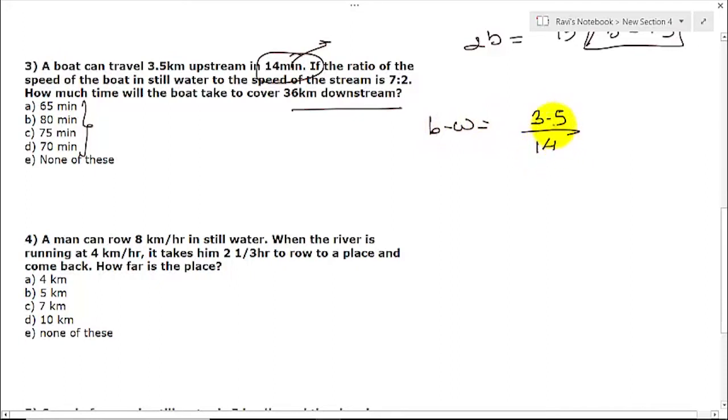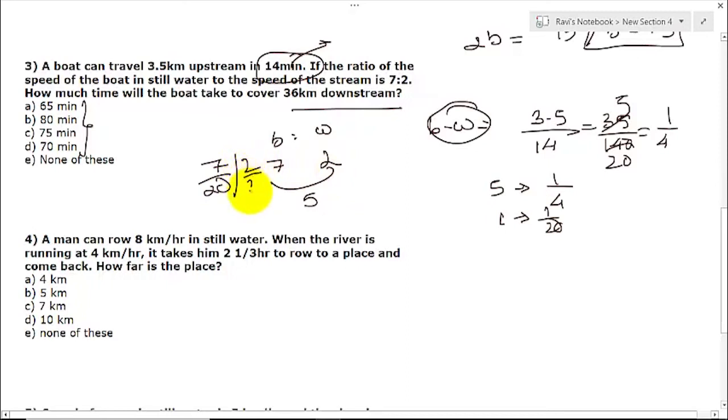So this will be 35 by 140. Let us remove the point. This will be 5 times, this will be 2 times, so 1 by 4. Now it is saying the ratio of the speed of the boat to the speed of the stream is given. So we know the difference between these two values is 1 by 4. Let us find the value of 1 unit. 7 minus 2 is 5. So 5 units is equivalent to 1 by 4, and 1 is equivalent to 1 by 20. So b will be 7 by 20 and water will be 2 by 20.